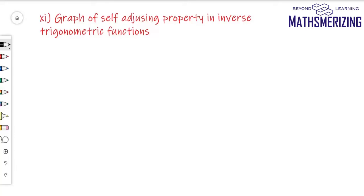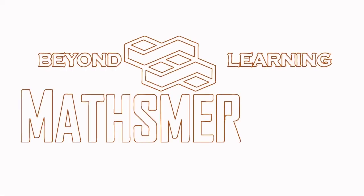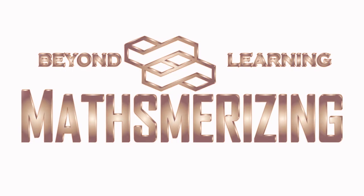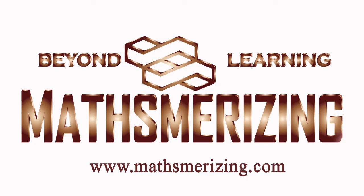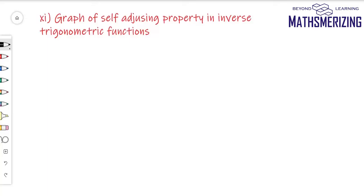The eleventh transformation is the graph of the self-adjusting property in inverse trigonometric functions. This property is very important, not just in inverse trigonometric functions, but in entire calculus. Before discussing how to draw the graph of these functions, let us discuss two things first.